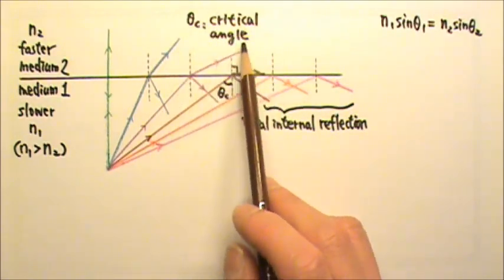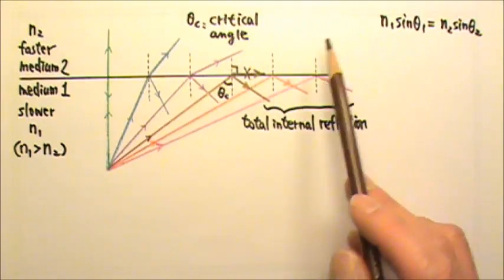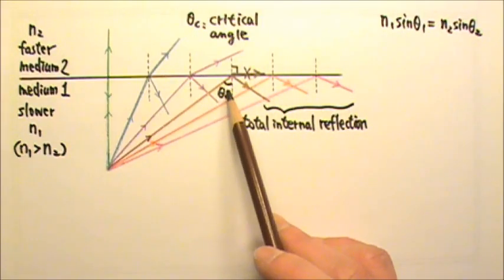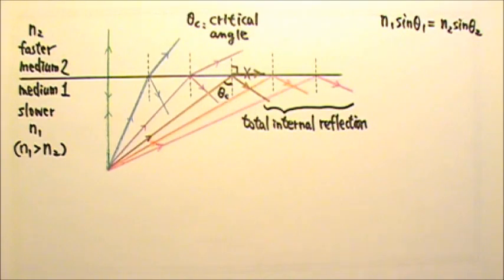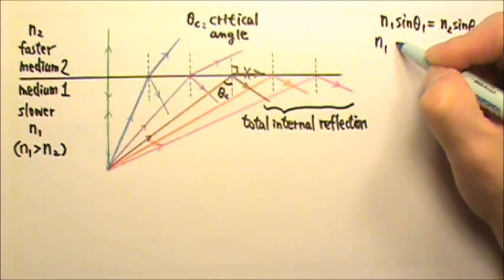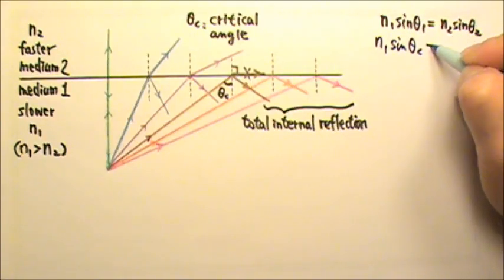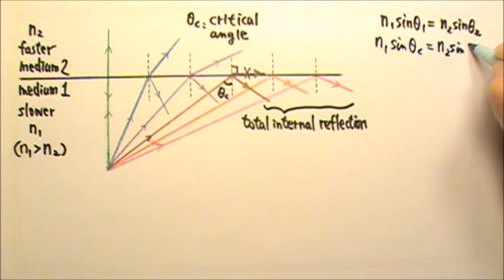We can find the critical angle using Snell's law. We know that when the angle of incidence equals the critical angle, the angle of refraction is 90 degrees. So N1 sin(critical angle), which is the angle of incidence, equals N2 sin(90 degrees).